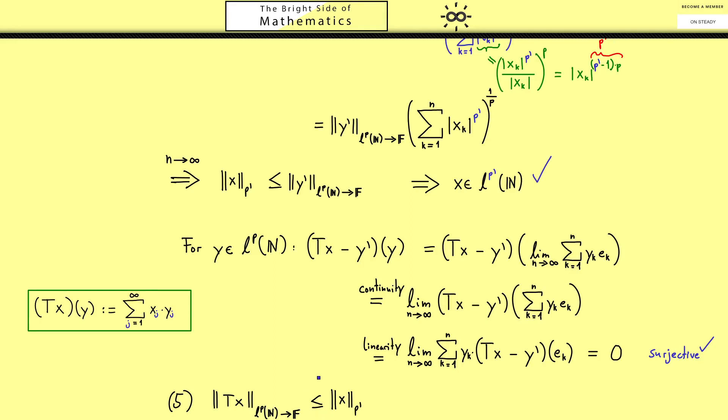Now for the other inequality I want to use what we did before so I have to choose the corresponding y prime here. This works if we know that T is injective. However I think that's easy to see if you look at this definition again. If Tx is 0 you can just put in the ek's for y again and then you see all the components of x have to be 0. Hence for each x there is exactly one y prime such that we can do the whole thing from before and we get the inequality here.